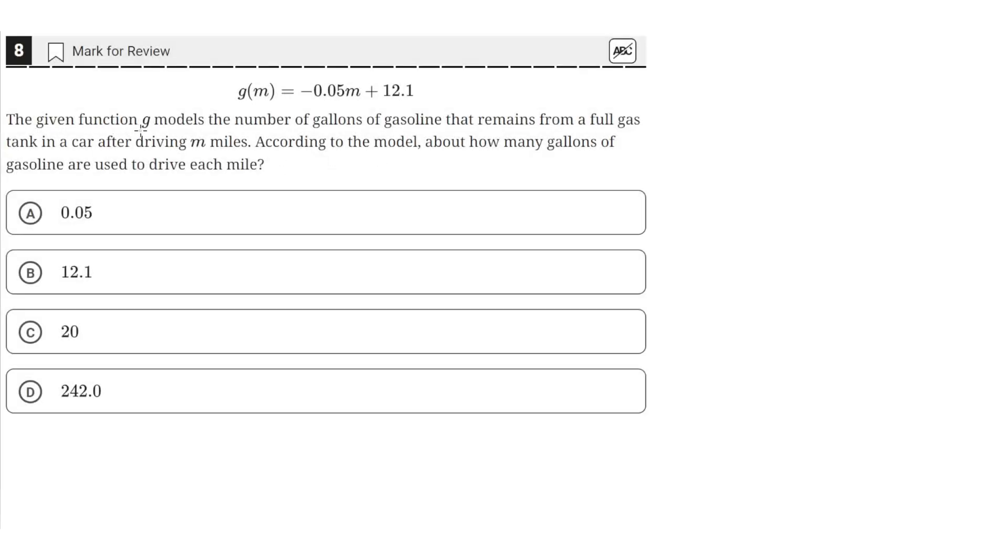The given function g models the number of gallons of gasoline that remains from a full gas tank in a car after driving m miles. According to the model, about how many gallons of gasoline are used to drive each mile?